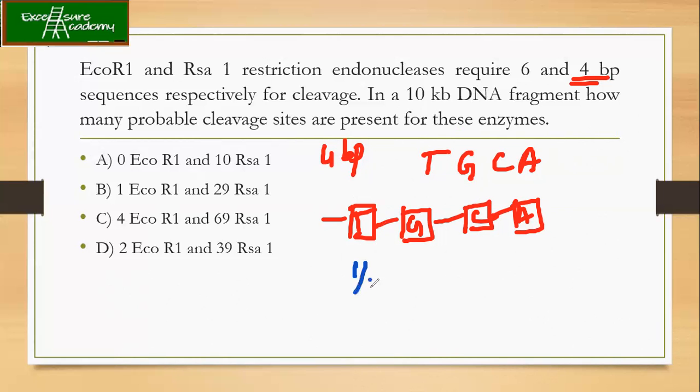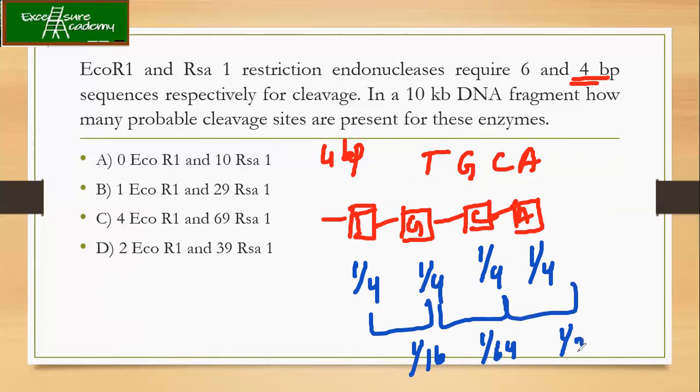Similar to what we just discussed, probability of having T is one by four, G is one by four, C is one by four, and A is one by four. So we get one by 16, one by 64, and then together one by 256. Similar to how we calculated for EcoR1, I'm going to calculate for Rsa1: 10 kilobase pair divided by 256.